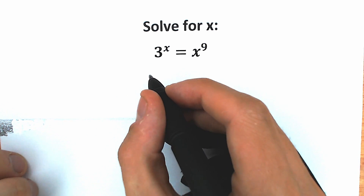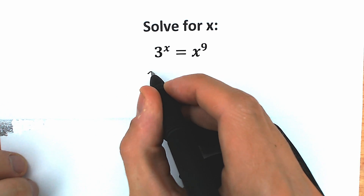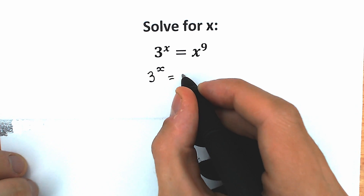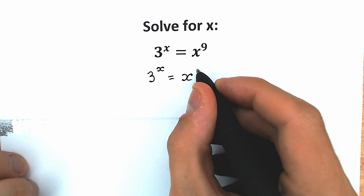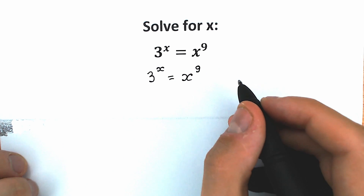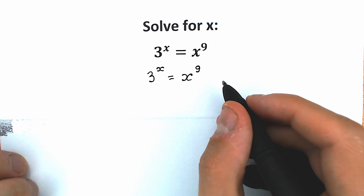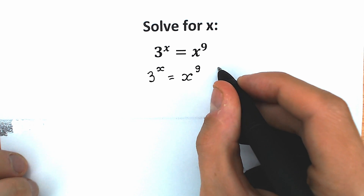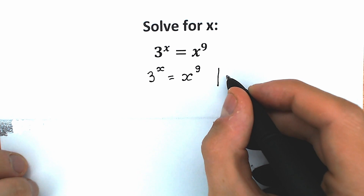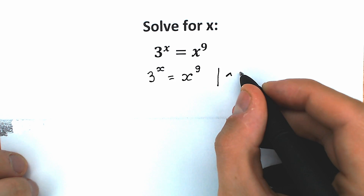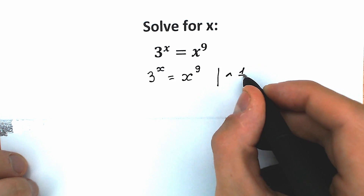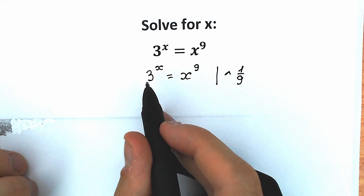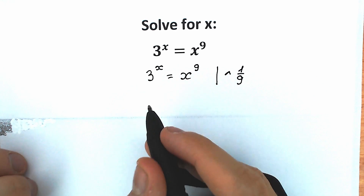First of all, let's rewrite our question right here. So we have 3 to the power x equal to x to the power 9. Here's our question. And first of all, let's raise both sides to the power 1 over 9. Don't ask me why, but let's see what will happen. It changed nothing because we're going to raise both sides.